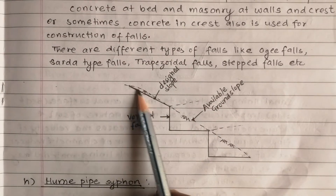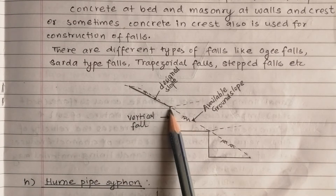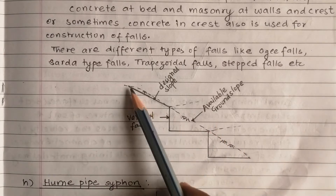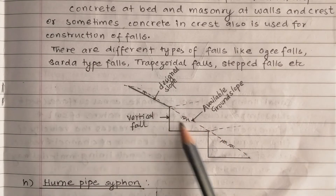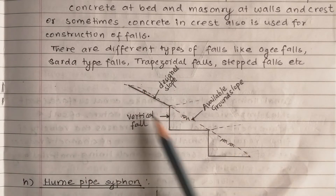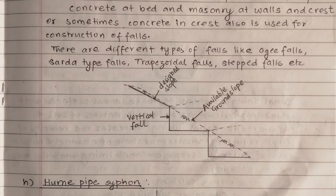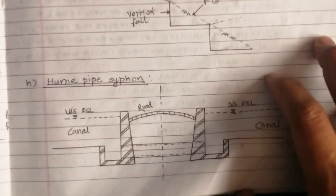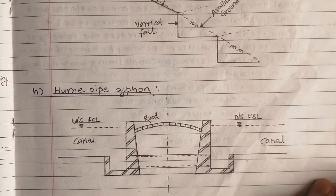If you have a design slope, this is the design slope. We have a vertical fall. Here is the bottom line — we have a vertical fall where the canal drops vertically.